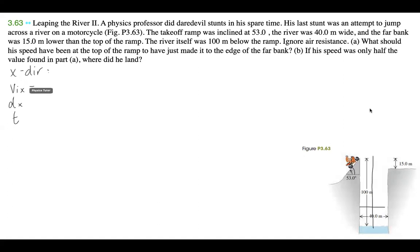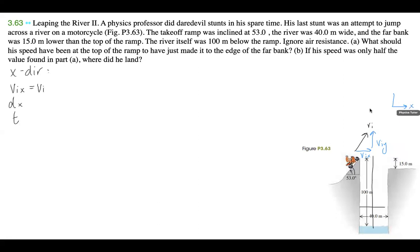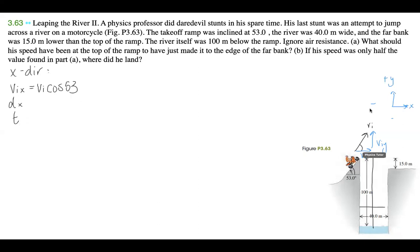We have some initial speed — we're not given that — and because the ramp is at 53 degrees, the speed in the x direction is v_ix, and the speed in the y direction is v_iy. Setting positive x to the right and positive y upward: v_ix equals v_i·cos53, d_x equals 40 meters, and time t is unknown for now.